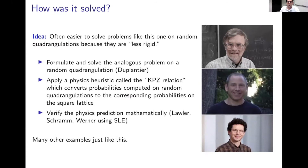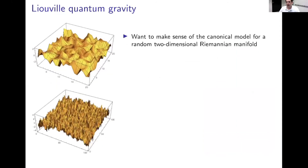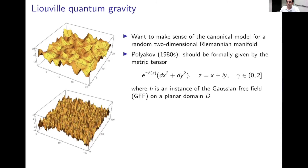Now let me move on to the other theory of random surfaces: Liouville quantum gravity. The idea again is to canonically make sense of a random surface — not from the perspective of discrete models, but from the perspective of Riemannian geometry. How do you pick a two-dimensional Riemannian manifold at random? A physicist named Polyakov said you should pick a random metric by starting with the Euclidean metric on a planar domain and perturbing it by a conformal factor e to the gamma H, where gamma is a parameter between zero and two. The random ingredient H is a random field called the Gaussian free field. When gamma equals zero, this is just the Euclidean metric, and you consider a larger and larger perturbation as gamma increases.